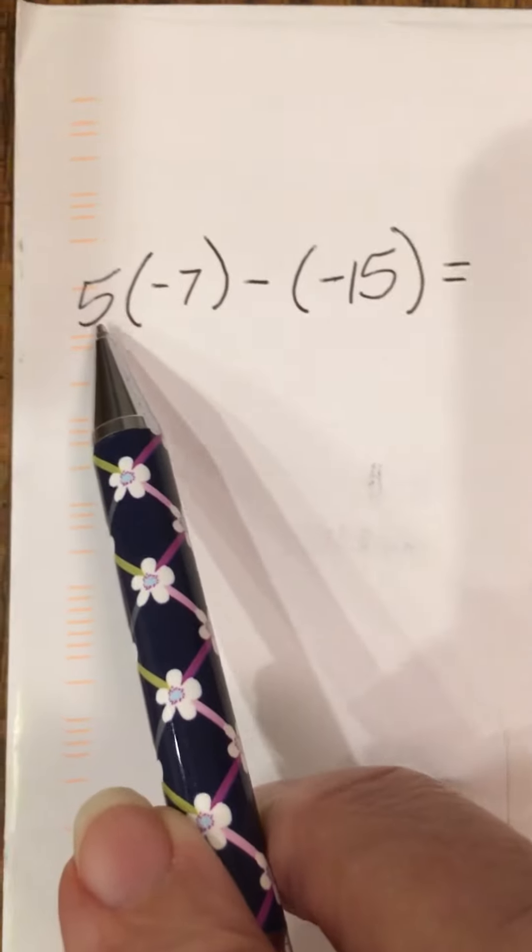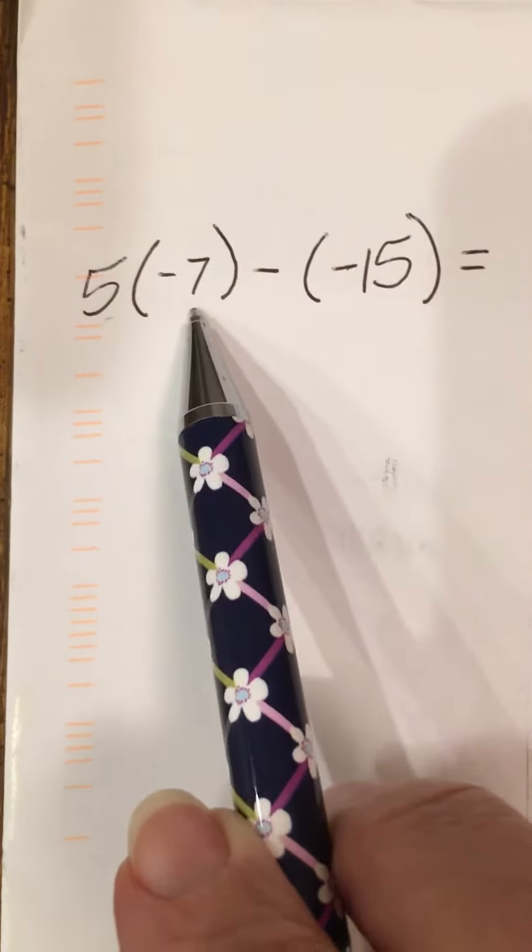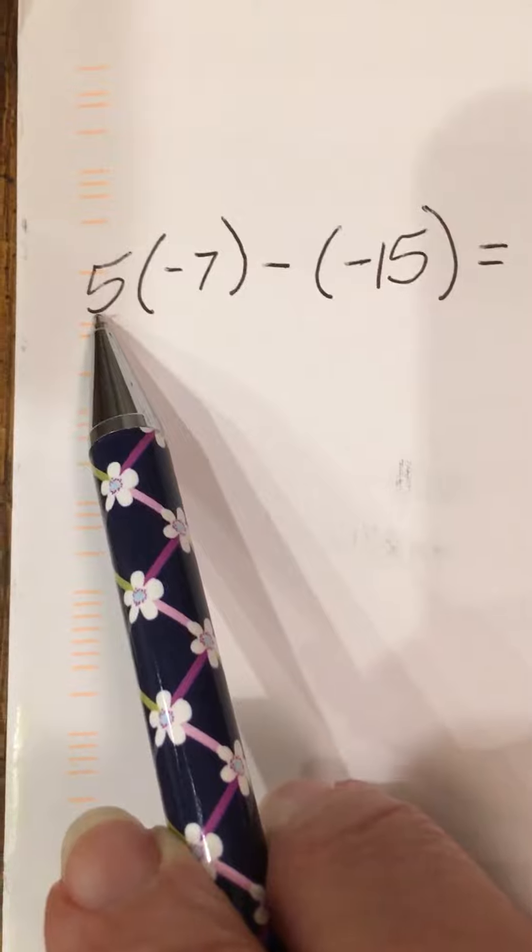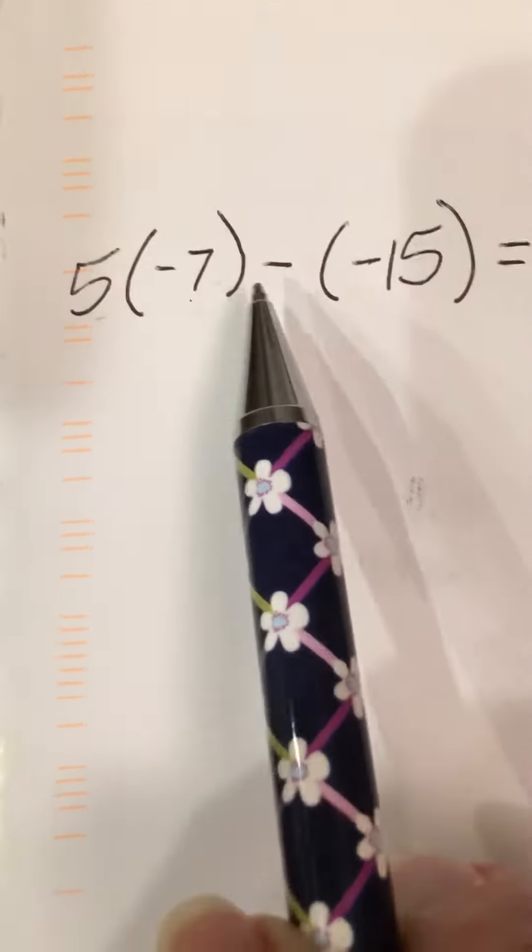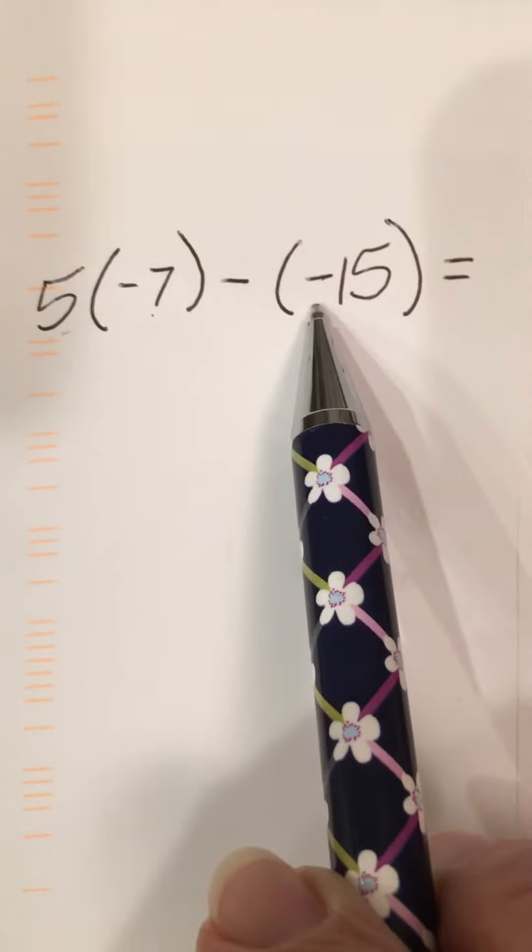Alright, so I just told you that when two numbers are next to each other, the implied operation is multiplication. So 5 is being multiplied by negative 7, and then we're subtracting negative 15.